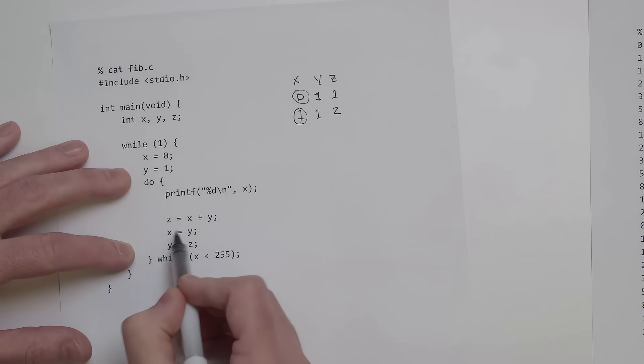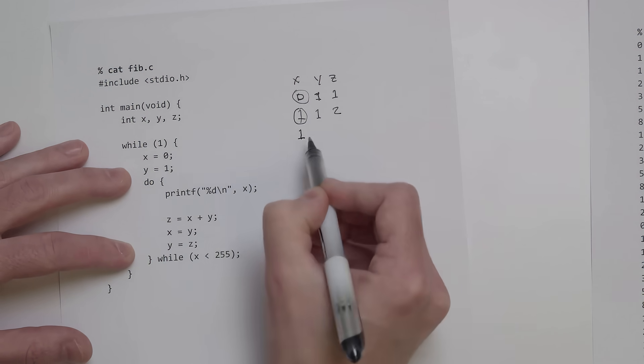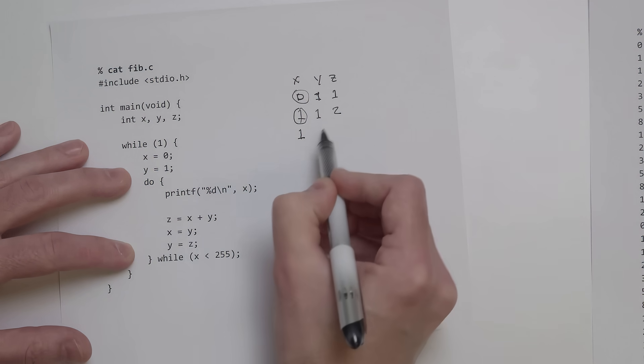Then we shift things over. x equals y so x equals 1, and then y equals z, z is 2, so now y becomes 2.